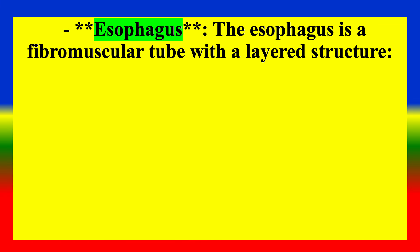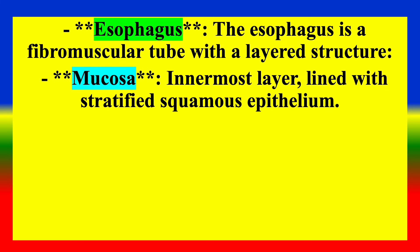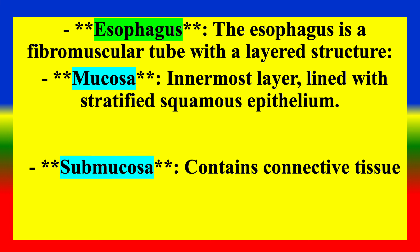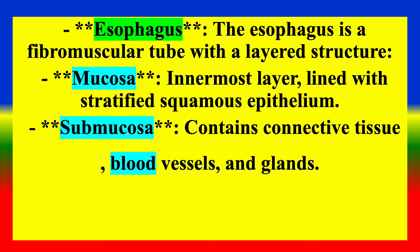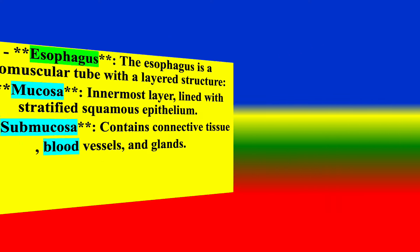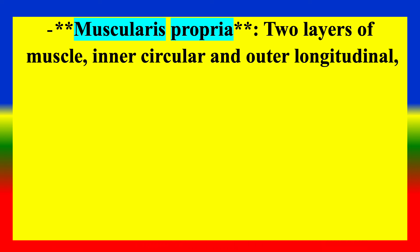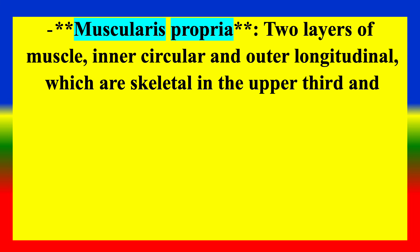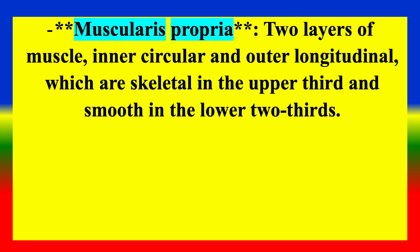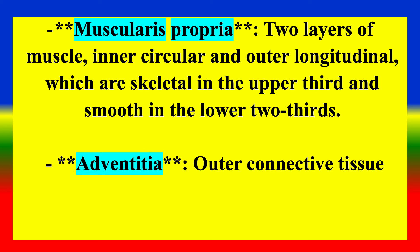Esophagus — General Structure: It is a fibromuscular tube with a layered structure. Mucosa: the innermost layer, lined with stratified squamous epithelium. Submucosa: contains connective tissue, blood vessels, and glands. Muscularis propria: two layers of muscle — inner circular and outer longitudinal — which are skeletal in the upper third and smooth in the lower third. Adventitia: the outer connective tissue layer.